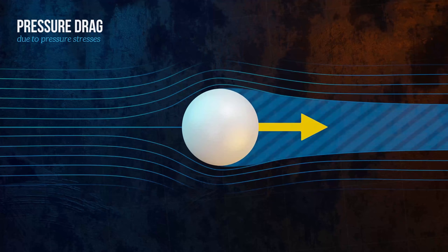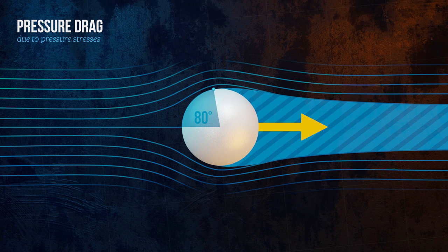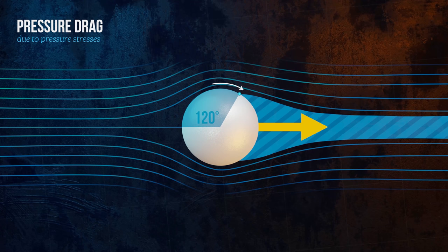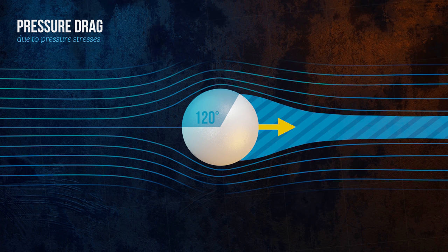Flow separation occurs at around 80 degrees for a smooth sphere in laminar flow. If the boundary layer is turbulent instead of laminar, it's better able to remain attached to the surface, and flow separation is delayed until around 120 degrees, which reduces the pressure drag significantly. This is because turbulence introduces a lot of mixing between the different layers of flow, and this momentum transfer means the flow can sustain a larger adverse pressure gradient without separating.